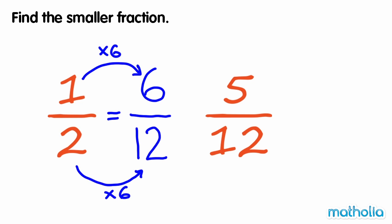Now to compare the fractions, we look at the numerator. Five is smaller than six, so five-twelfths is smaller than six-twelfths. Therefore, five-twelfths is the smaller fraction.